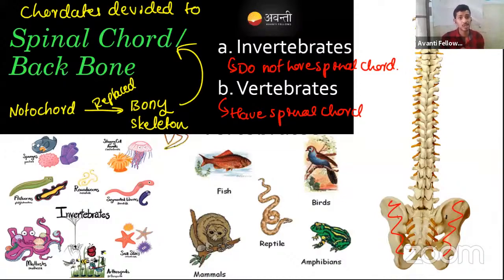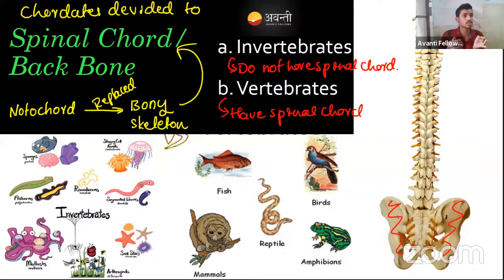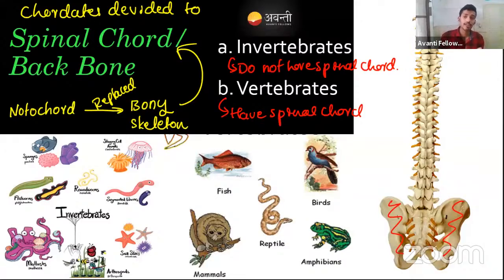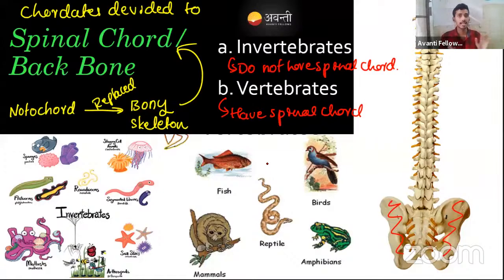Cephalochordata — 'cephalo' means head, so the notochord is present in the head region. Urochordata — 'uro' means tail, so the notochord is in the tail region. In non-chordates the notochord is not present throughout life, but in chordates and vertebrates the spinal cord remains throughout life — there are no changes, just development continuing up to a certain age.